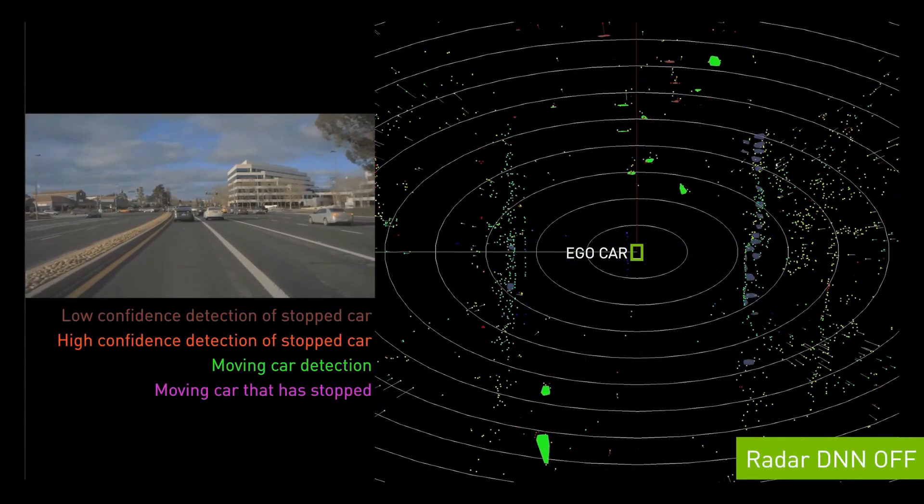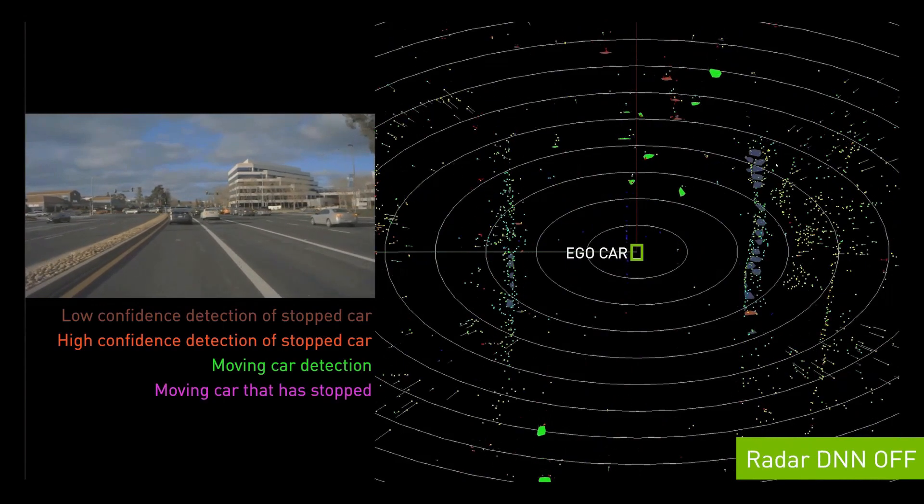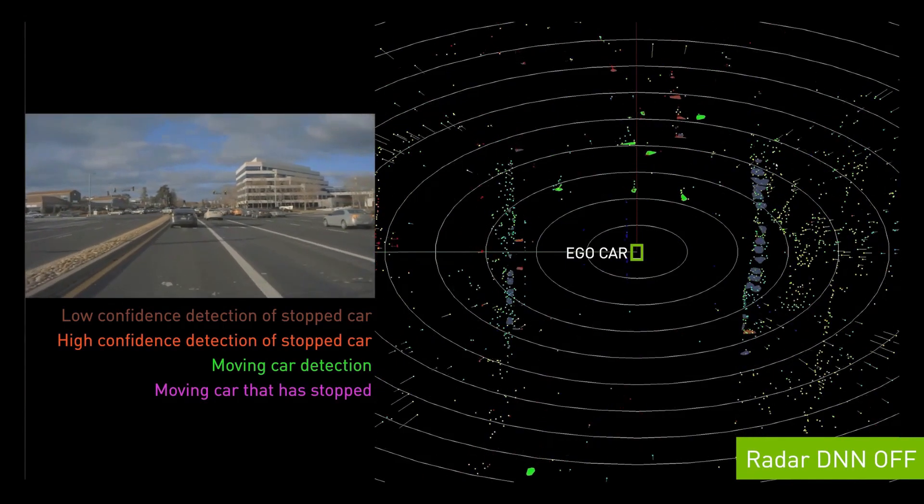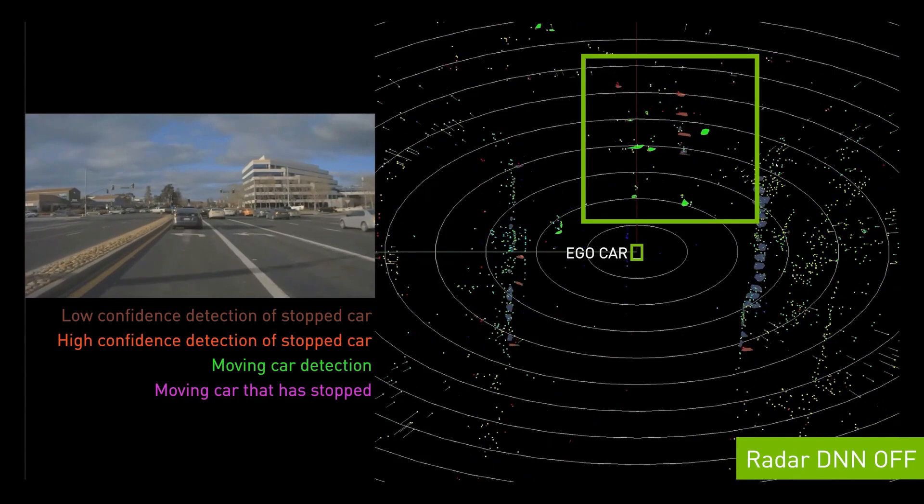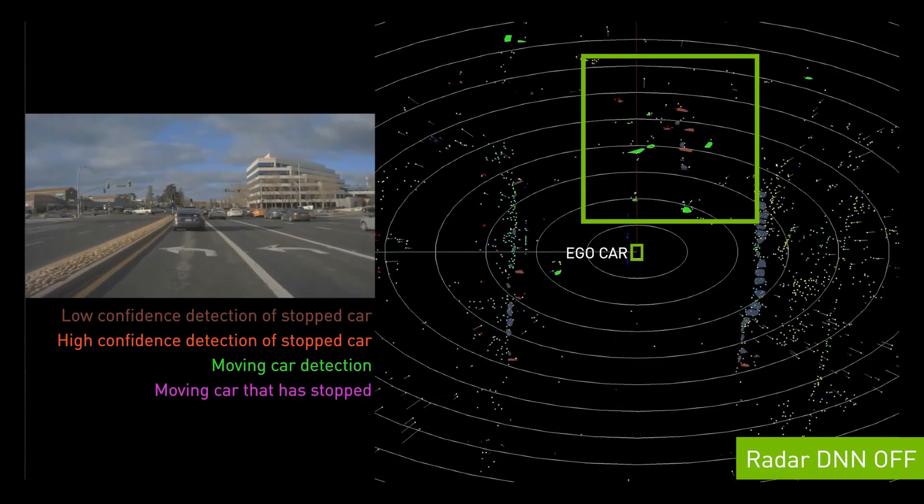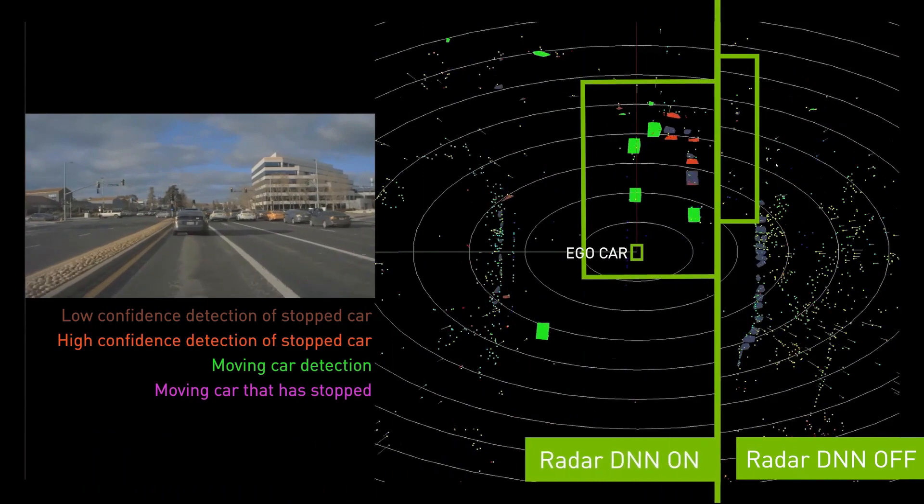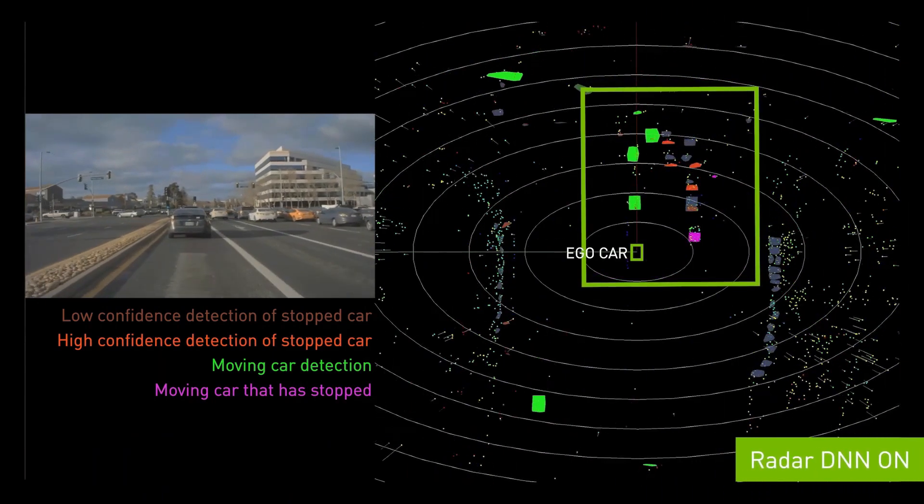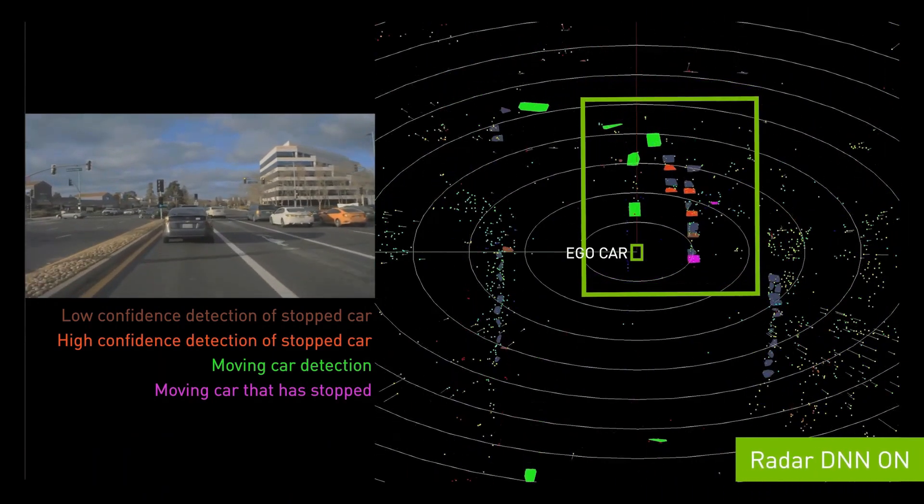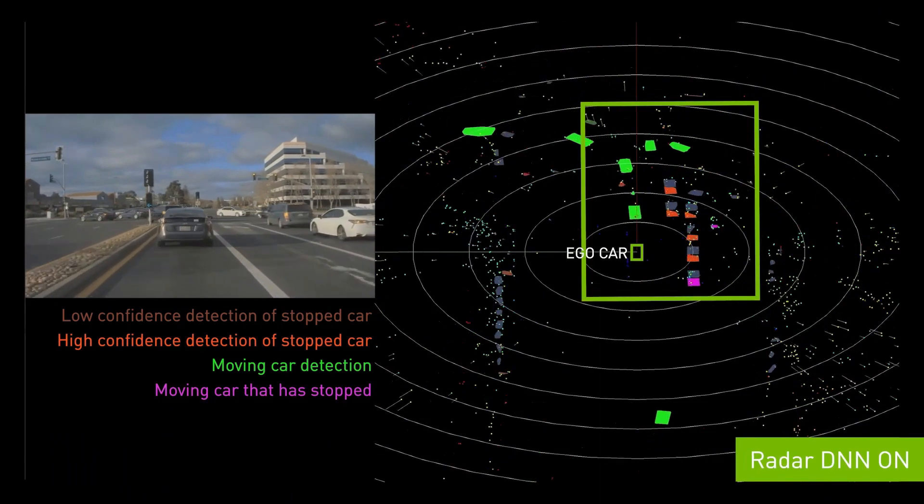Here we see another challenging scenario. The ego car is approaching an intersection that has both stationary and moving vehicles. With just classical radar processing, we observe both low confidence and missing vehicle detections. With the radar DNN, however, more objects are correctly detected, including their 3D shape and orientation, and are detected with higher confidence.